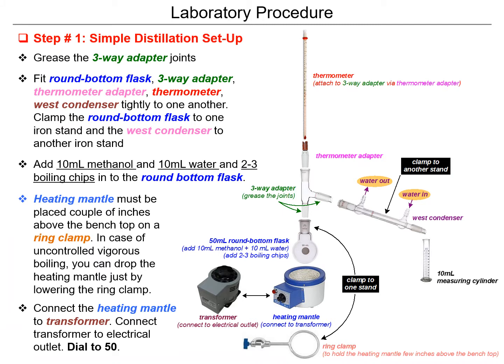The laboratory procedure starts with assembling the apparatus. To do so, you need a clean and dry apparatus. You also need to grease the three-way adapter to make it easier to remove later and to prevent cracks while tightening. Then prepare the round bottom flask, the adapter, the thermometer, the heating source, and the transformer. Hang the heating mantle over the ring clamp, put the round bottom flask on the heating mantle, then attach the three-way adapter, and to it attach the thermometer.